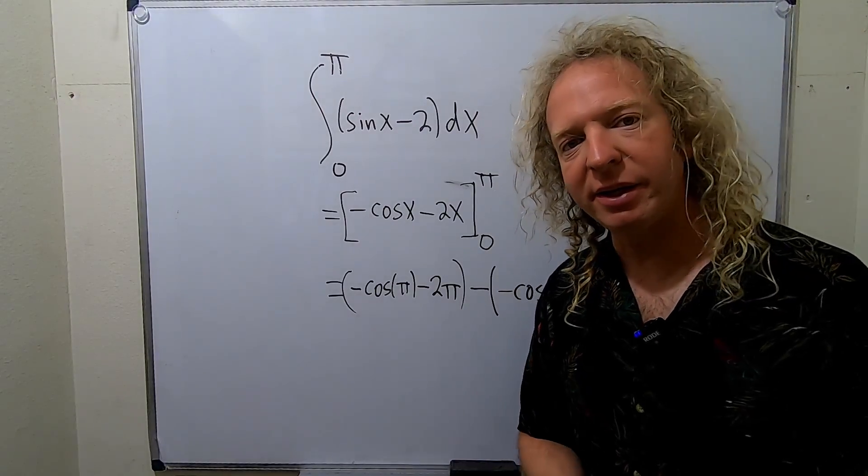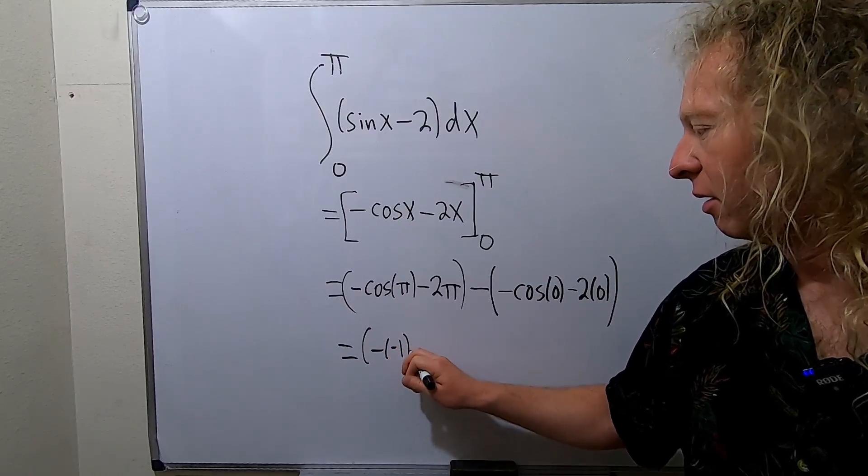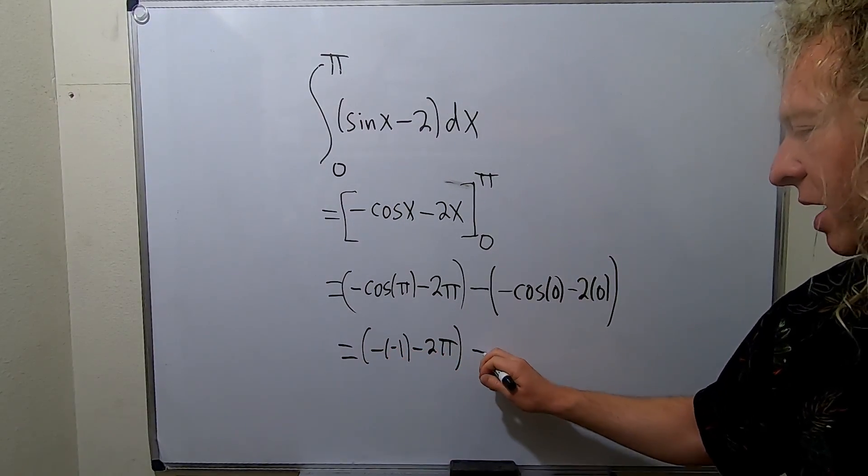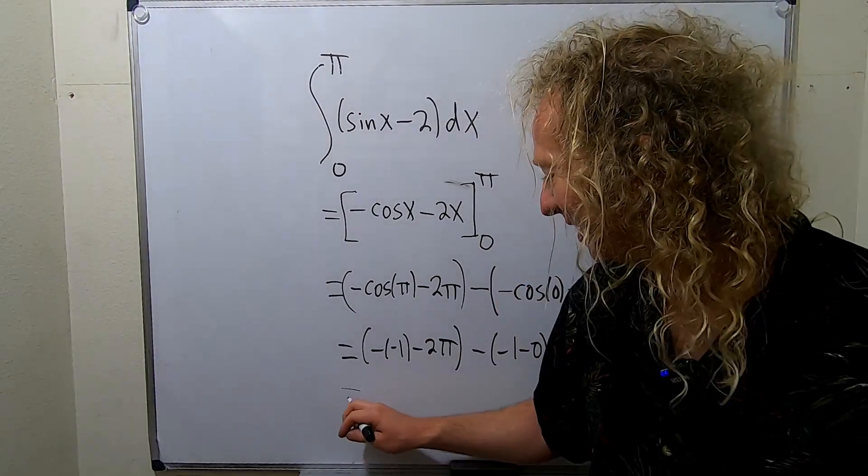Cosine of pi is negative 1, so this is going to be negative negative 1 minus 2 pi. Cosine of 0 is 1, this is minus negative 1 minus 0. I'm showing like every single step. It's kind of fun.